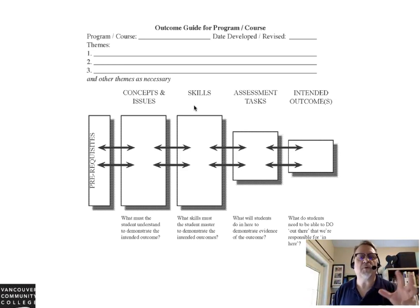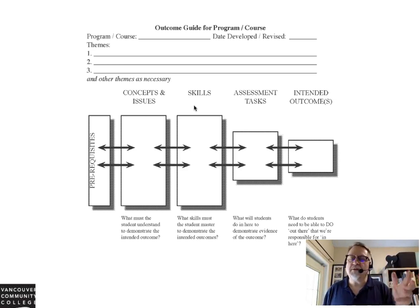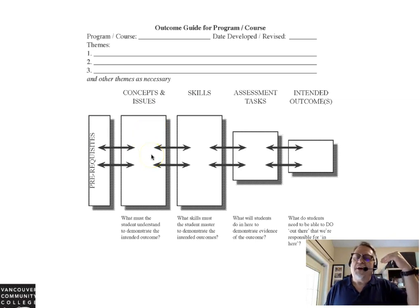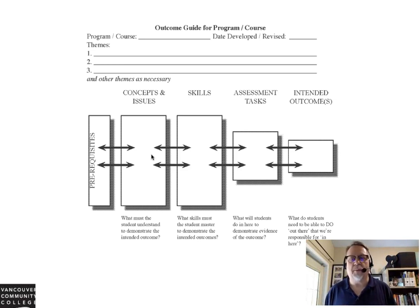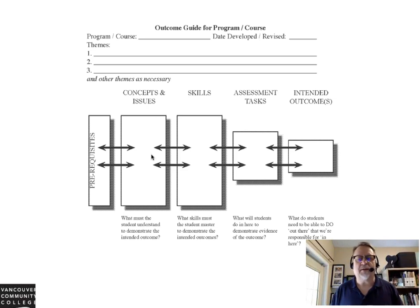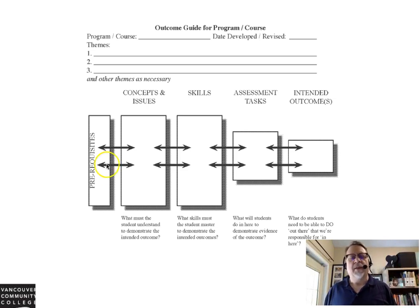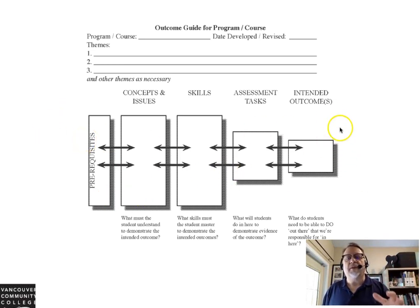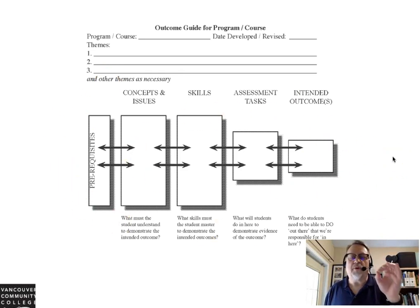In the outcome guide for this course, we also have a section where you look at the concepts and issues — what the student must understand in order to work towards the intended outcome. These guide and direct some of the instructional activities within your course or workshop. The prerequisites section covers what people need to understand before they even get into your course.